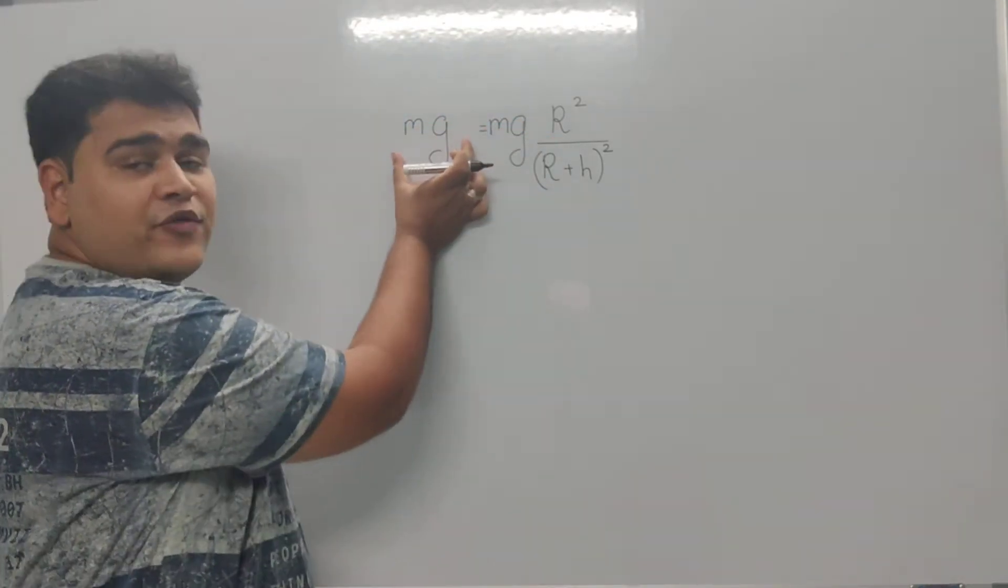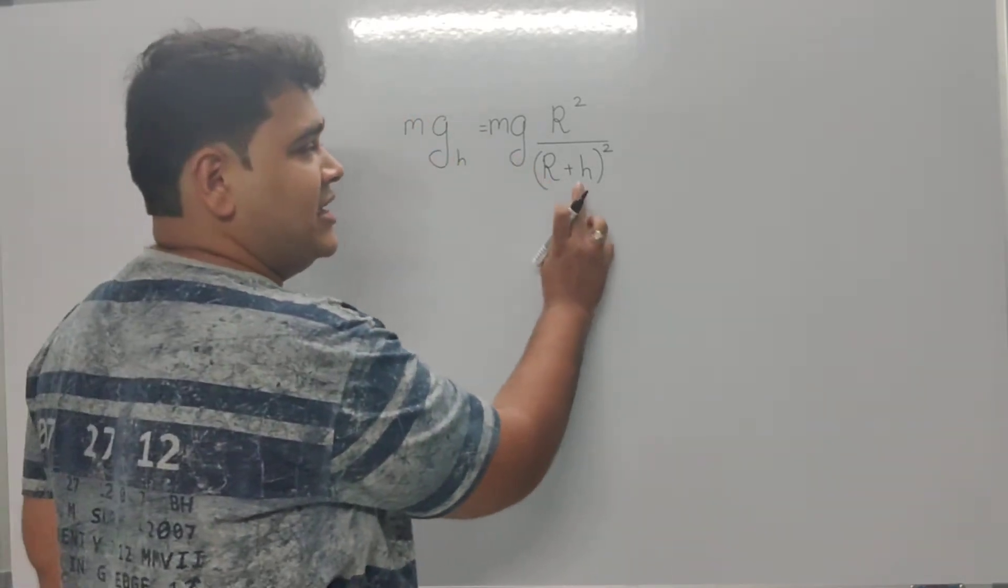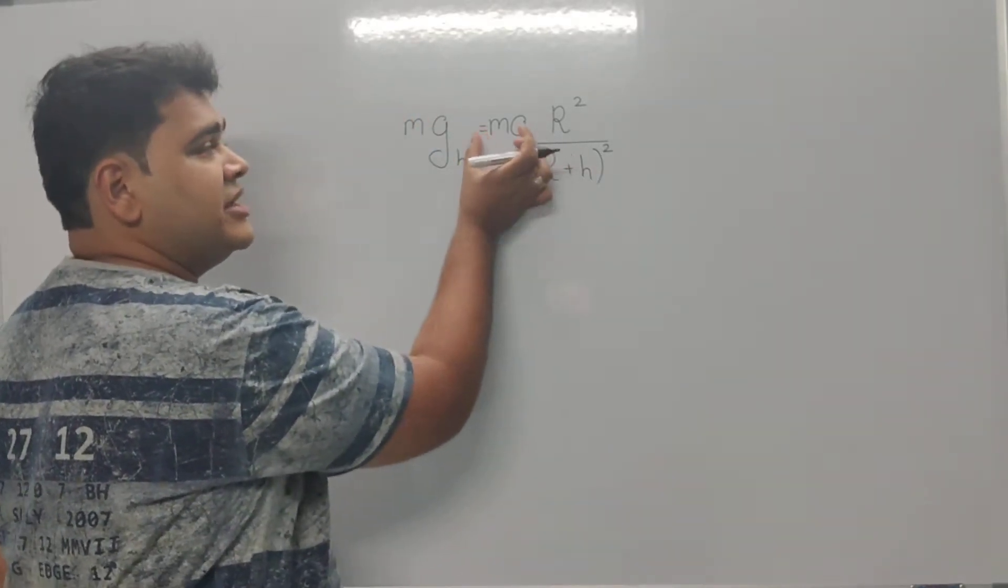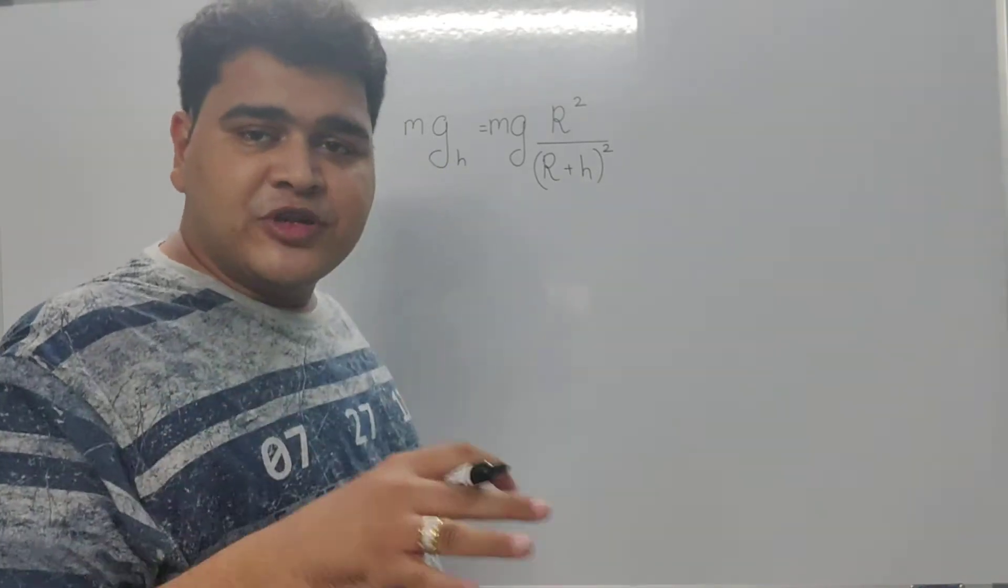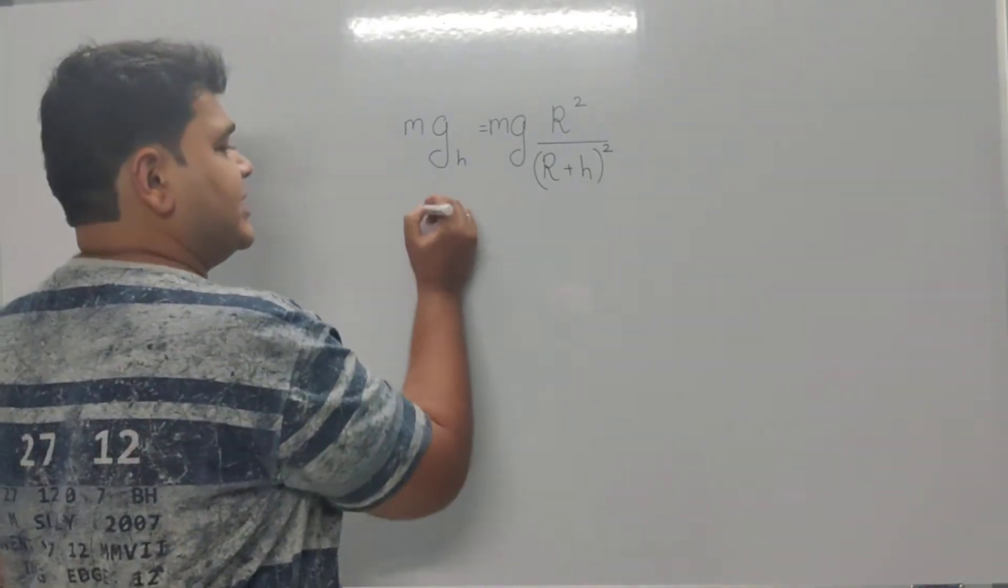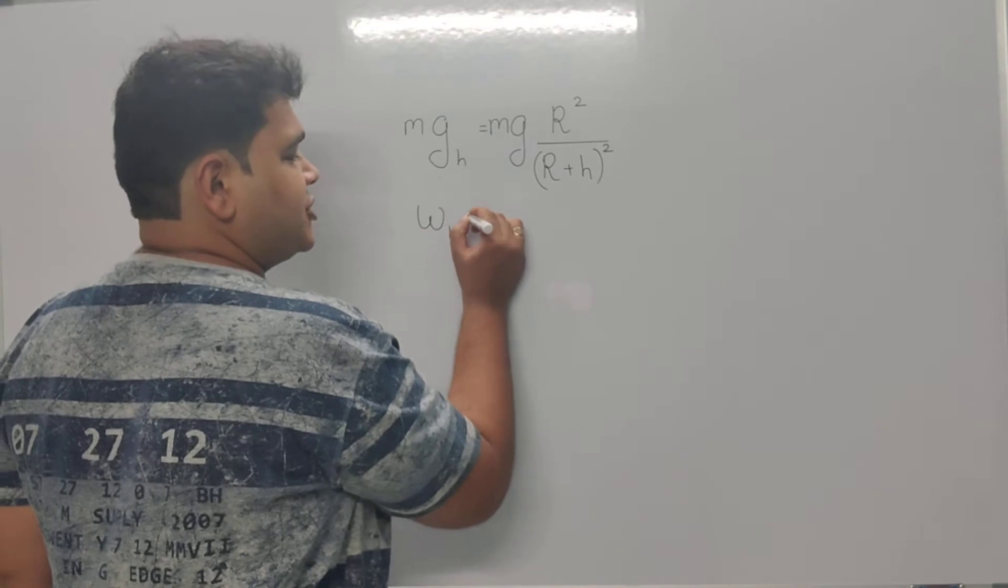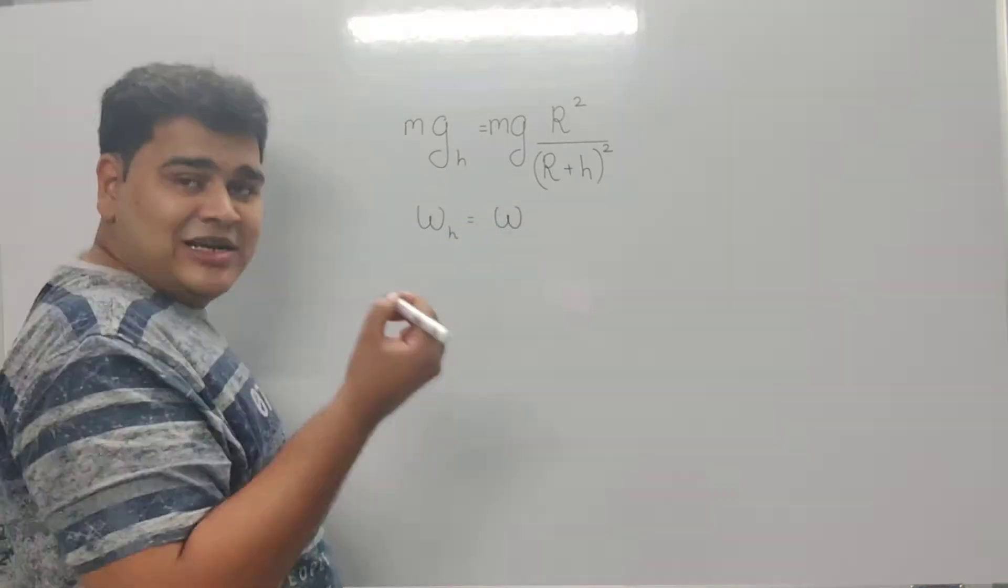Definitely mg_h is the weight of the body at a given height h, whereas mg is the weight of the body on the surface of the earth. So weight at height h equals weight on the surface times R² over (R+h)².